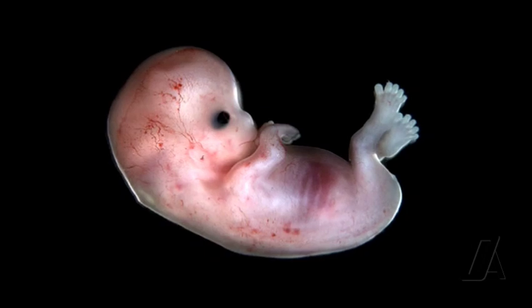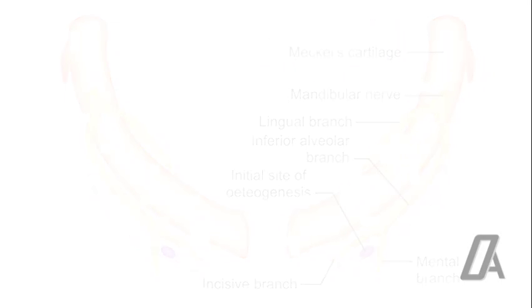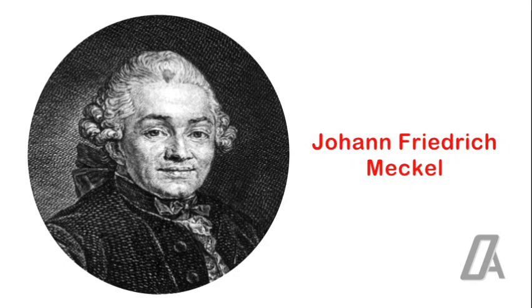The creation of the mandible is a fascinating process that begins with the formation of two separate pieces of cartilage. These are not just any pieces of cartilage, they are Meckel's cartilages. Named after the German anatomist Johann Friedrich Meckel, these structures play a pivotal role in the formation of our mandible.